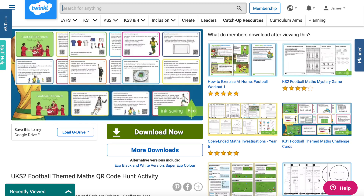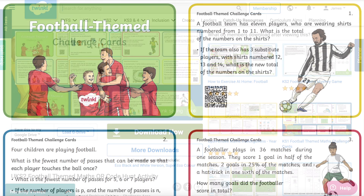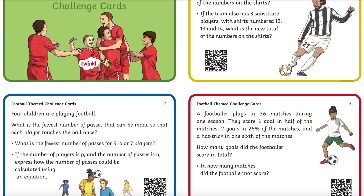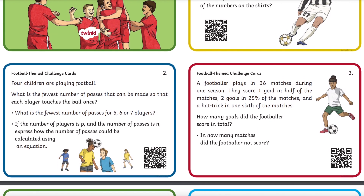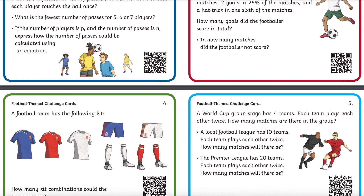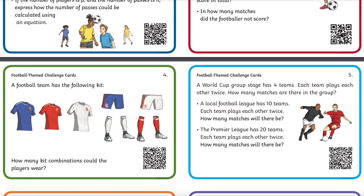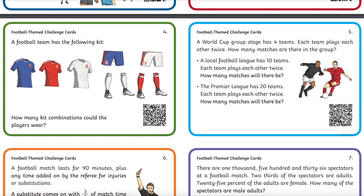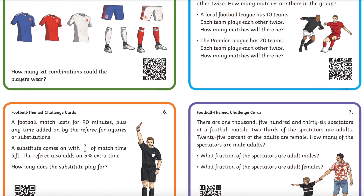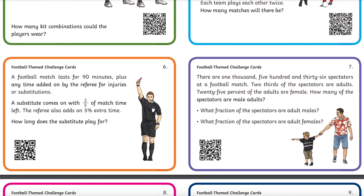Twinkle have a variety of football themed challenge cards on the website. However, this set of challenge cards has a twist. The Upper Key Stage 2 football themed maths QR code hunt activity allows children to work individually or in pairs to work out the answers.